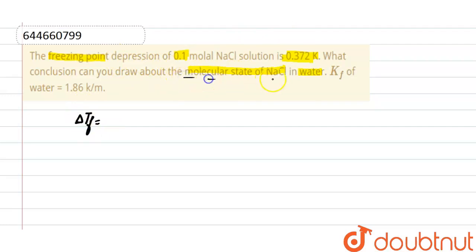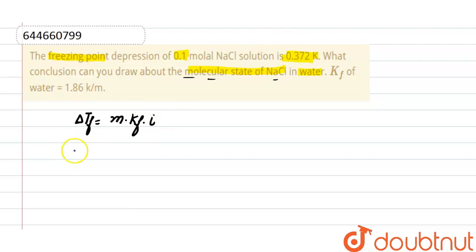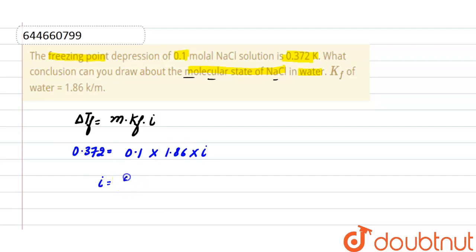The depression in freezing point is equal to molality into Kf, that is the cryoscopic constant, into the van't factor. Putting the values: 0.372 equals molality 0.1, cryoscopic constant 1.86, and the van't factor. From here, the van't factor has a value of 2.